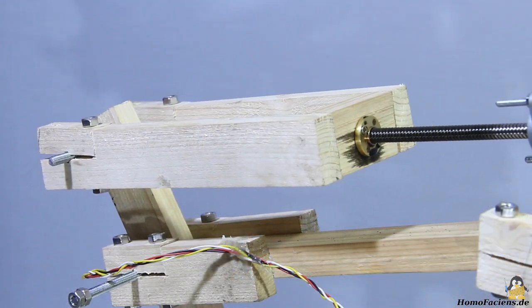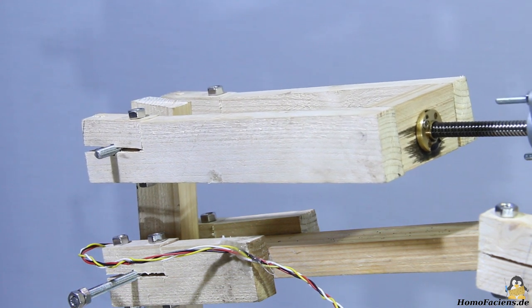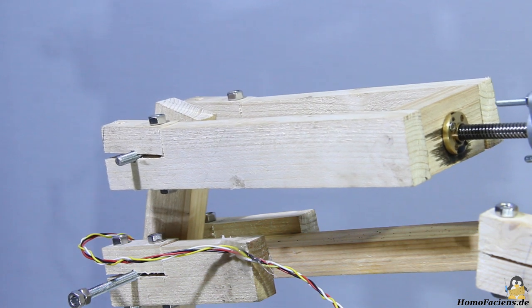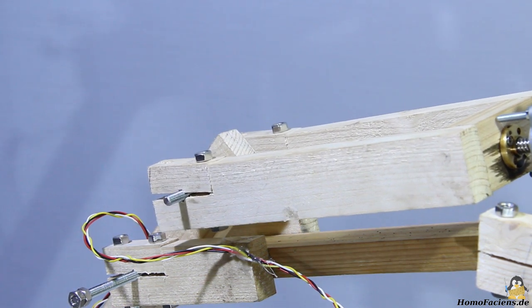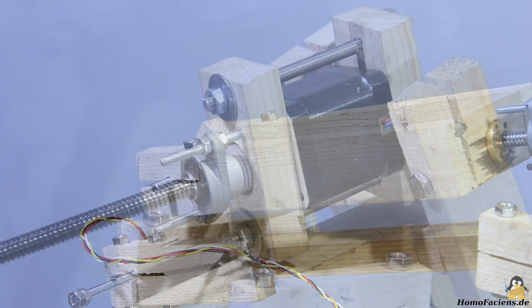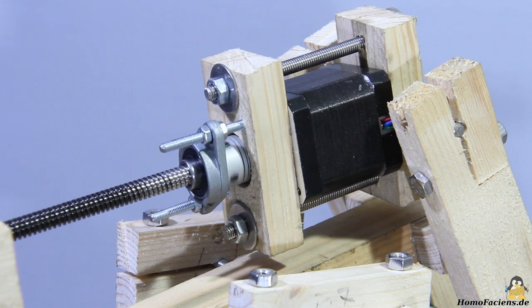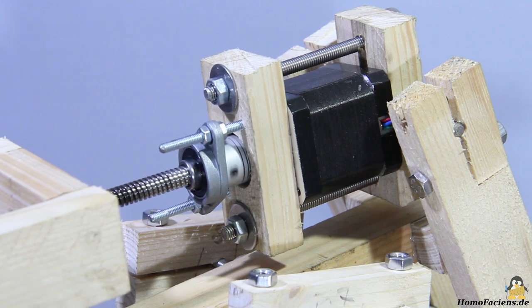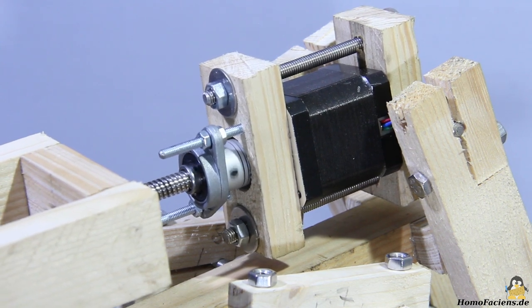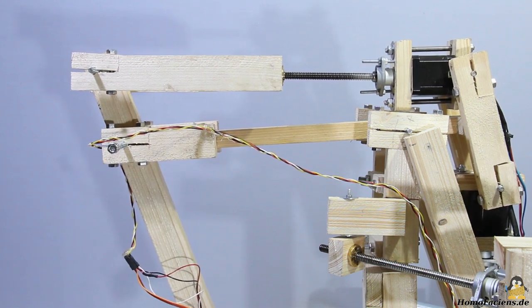The joints are driven by the stepper motors and spindles of the cannibalized CNC machine. The press nuts are attached to a subframe made of roof battens. The same applies to the stepper motors and the ball bearings of the spindles. The two additional pivot points of the drive are necessary so that the lead screw and motor axis are always in line during the movement.